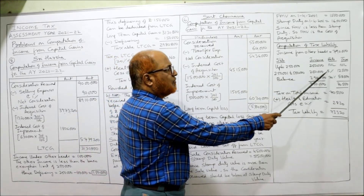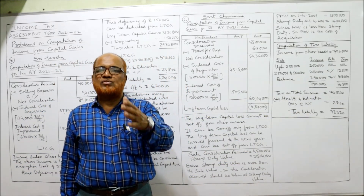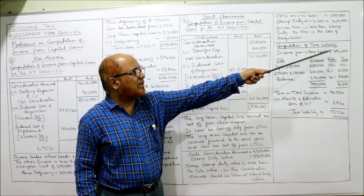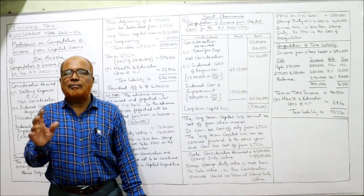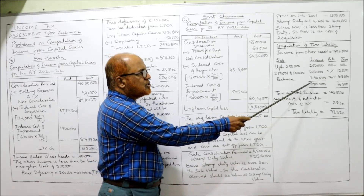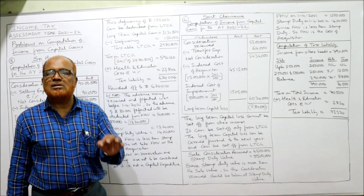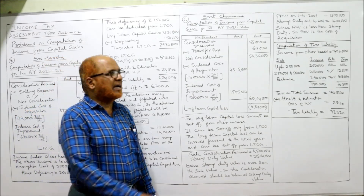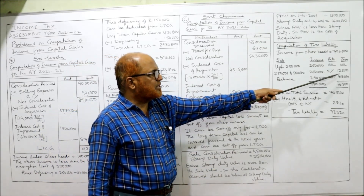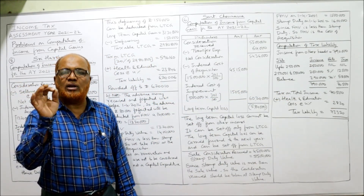The next slab goes from Rs. 5,00,001 to Rs. 10,00,000, but our income is only Rs. 7,90,000. So the balance is Rs. 7,90,000 minus Rs. 5,00,000 = Rs. 2,90,000. Tax at 20% on Rs. 2,90,000 = Rs. 58,000. Total tax: Rs. 12,500 plus Rs. 58,000 = Rs. 70,500. Adding health and education cess at 4% = Rs. 2,820. Total tax liability = Rs. 73,320.